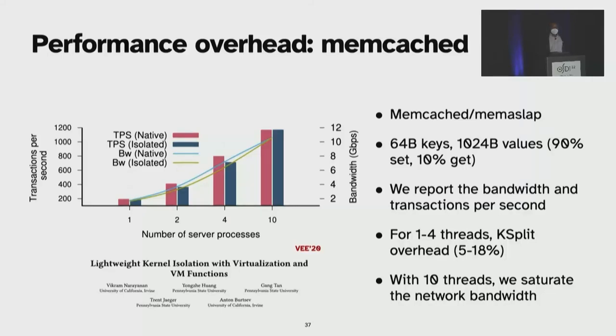To measure the performance overhead, we ran memcached benchmark on the isolated iXGBE driver using the memaslab load generator. We use 64-byte keys and 1,024-byte values with 90% set and 10% get configuration. Here we report the bandwidth and transactions per second. For one to four threads, K-split overhead is around 5% to 18% compared to the non-isolated driver. And with 10 threads, we saturate the network bandwidth, but at an increased CPU overhead due to the additional domain crossings. For more details on the isolation performance, please refer to the original LVD's paper on how it scales across the entire system.